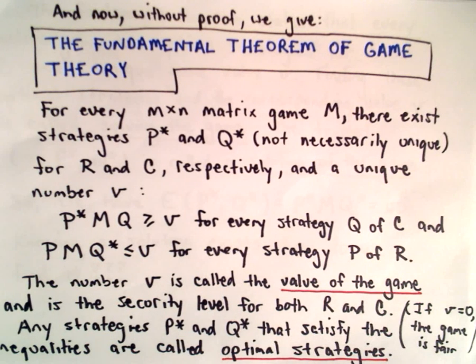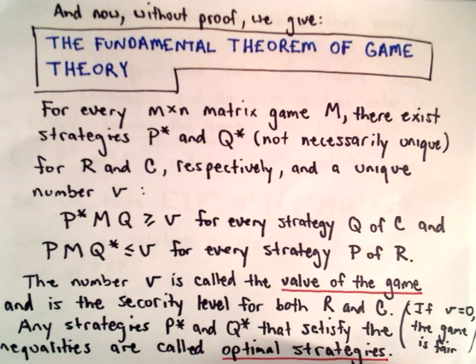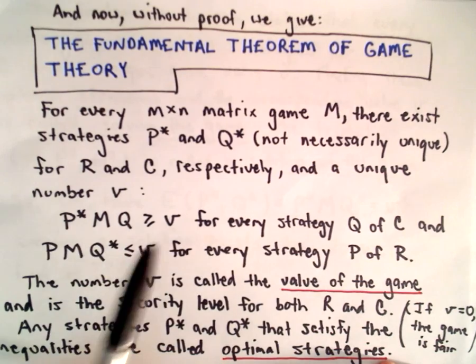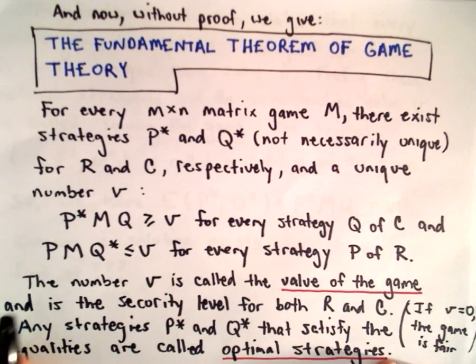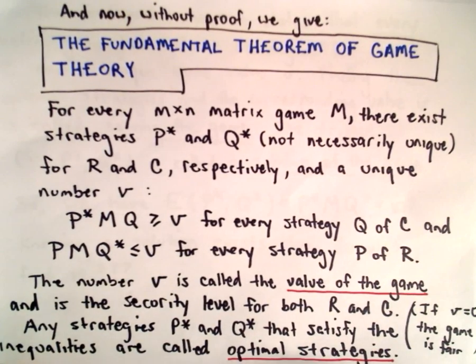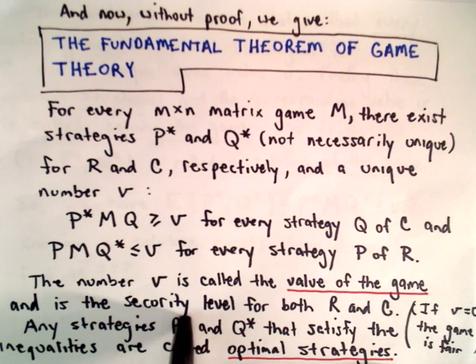And that's not the value in that case, that's simply the expected value. So the value, plain old value, that's sort of the optimal case situation when you talk about the value. And this is what's known as the security level for both R and C.